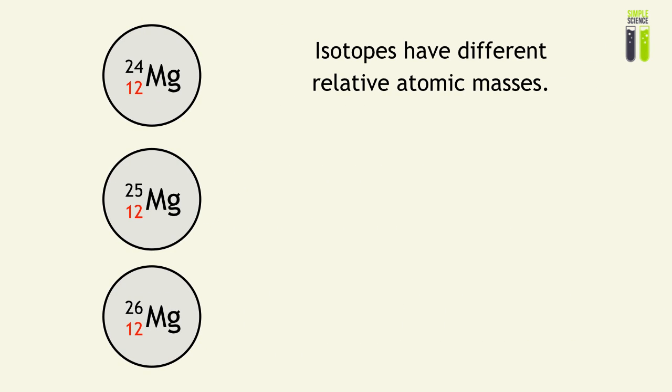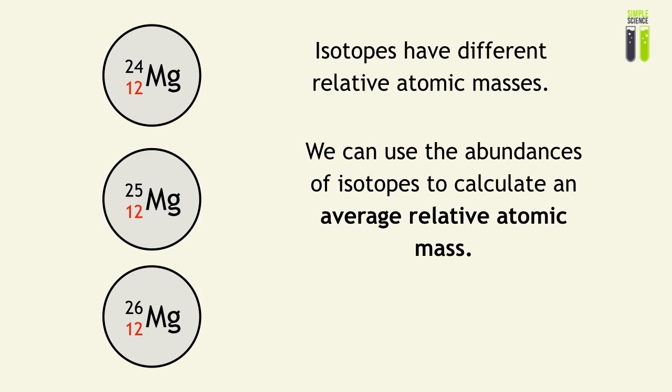And we know that since these isotopes have a different relative atomic mass, we can use it to calculate one specific average relative atomic mass for us to put on the periodic table and to use for calculations.